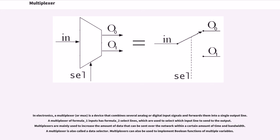Multiplexers are mainly used to increase the amount of data that can be sent over the network within a certain amount of time and bandwidth. A multiplexer is also called a data selector. Multiplexers can also be used to implement boolean functions of multiple variables.